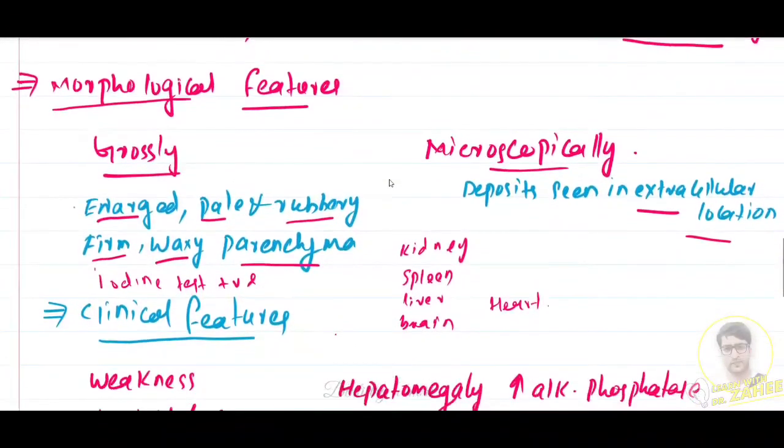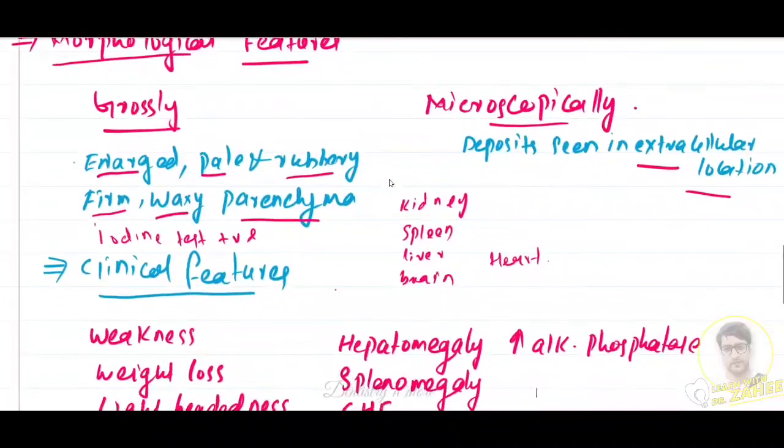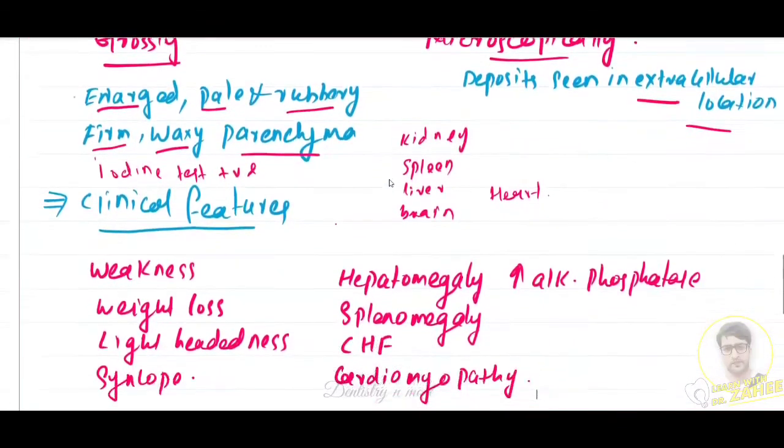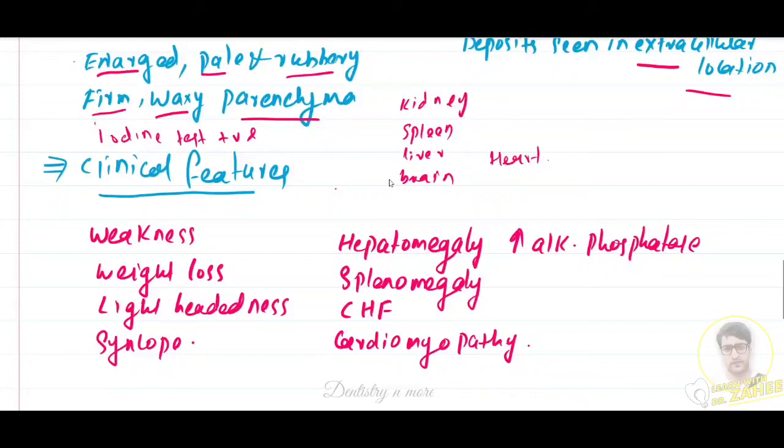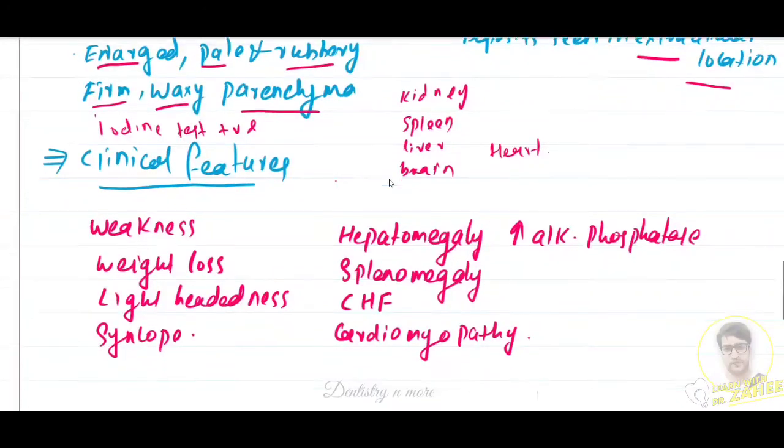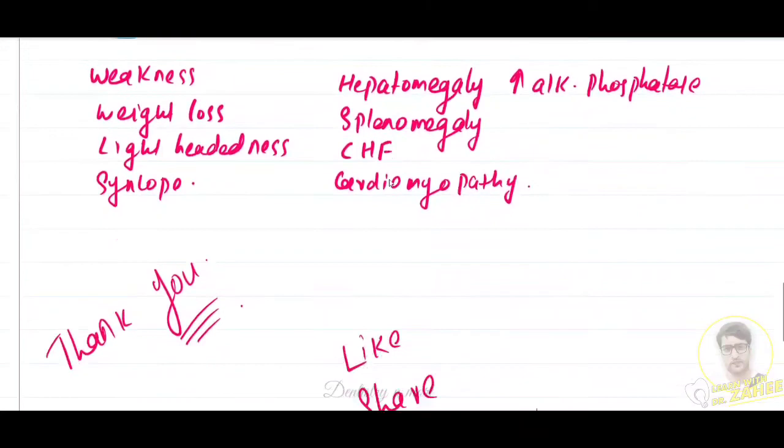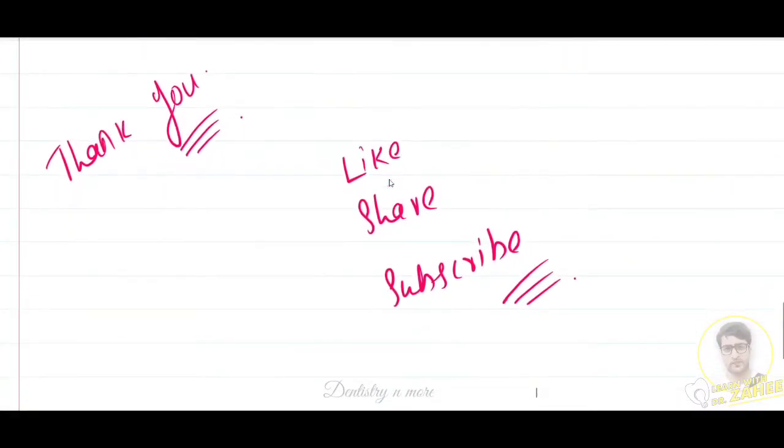So that was all about amyloidosis. It is commonly asked as a short note or in oral pathology or general medicine. The clinical features could be weakness, weight loss, lightheadedness, and cough. If affecting the liver there will be hepatomegaly with increased alkaline phosphatase, splenomegaly, cardiomyopathy - depends on the organ where it gets deposited. I'll come up with a new topic in dentistry and more. Thank you.